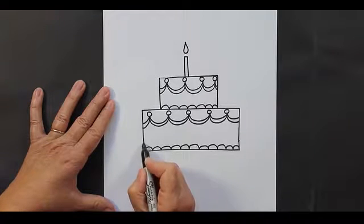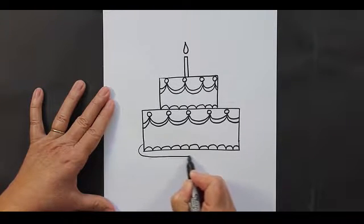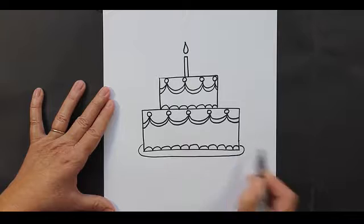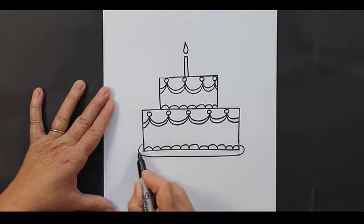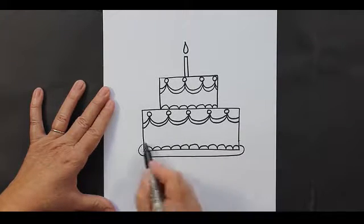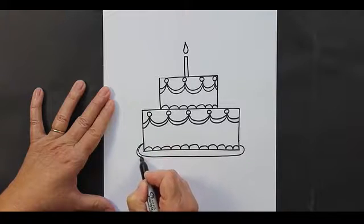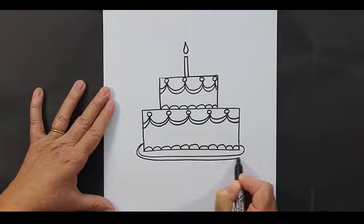Now we're going to go down to the bottom, because we want to put this cake on a fancy platter. So it's basically just an upside-down C that is attached to another one, just like this.